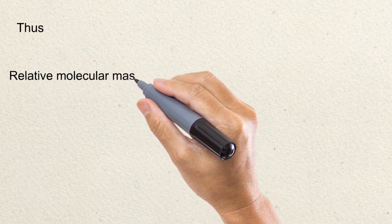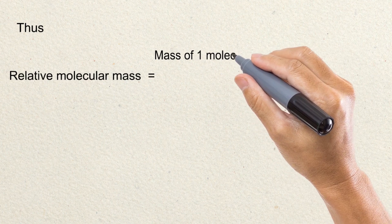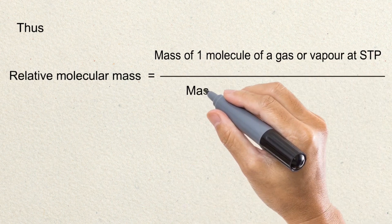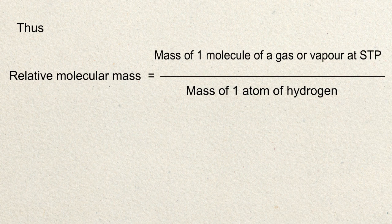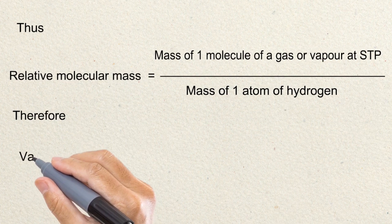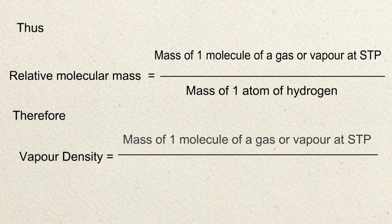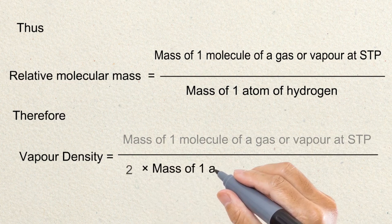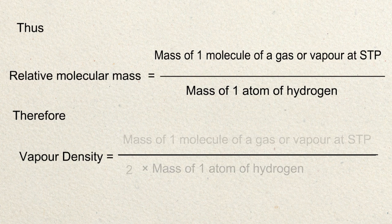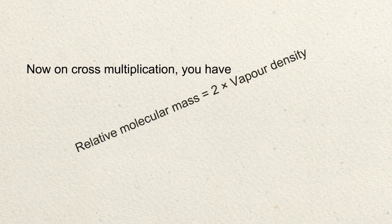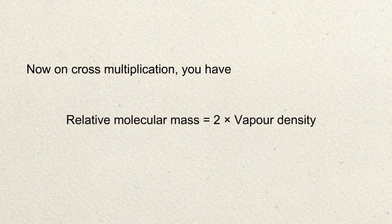The relative molecular mass is equal to the mass of one molecule of gas or vapour at STP divided by the mass of one atom of hydrogen. Since vapour density equals mass of one molecule divided by two times the mass of one atom of hydrogen, it follows that the relative molecular mass is equal to two times the vapour density.